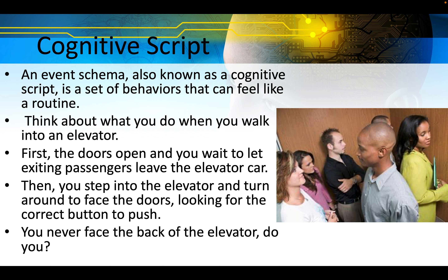An event schema, also known as a cognitive script, is a set of behaviors that can feel like a routine. Think about what you do when you walk into an elevator: the doors open and you wait to let exiting passengers leave, then you step in and turn around to face the doors, looking for the correct button to push. You never face the back of the elevator — except in this image, he's facing the wrong direction.